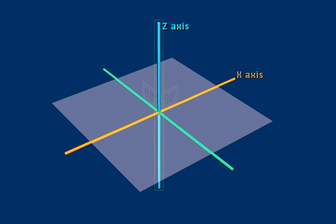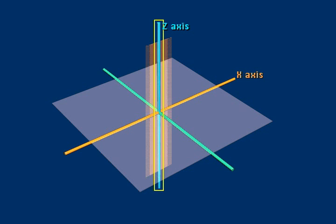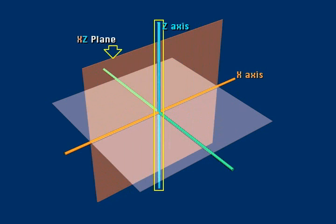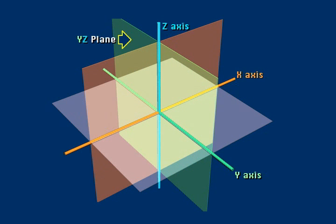This third axis is combined with the first axis, the x-axis, to form a second plane, the xz-plane. It is also combined with the y-axis to form the third intersecting plane. This plane is called the yz-plane.